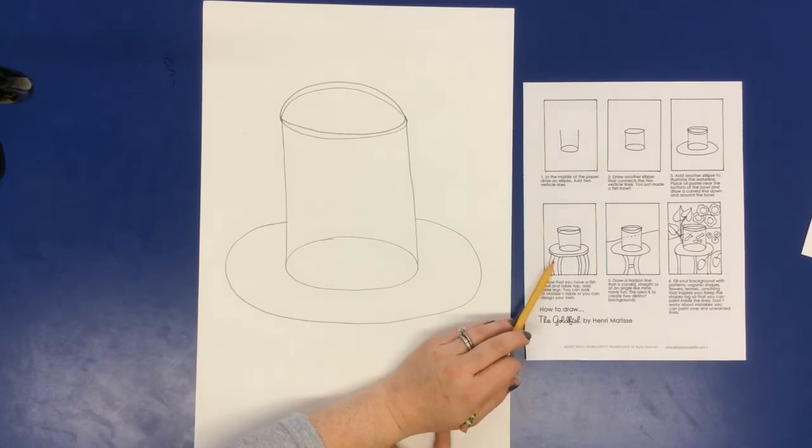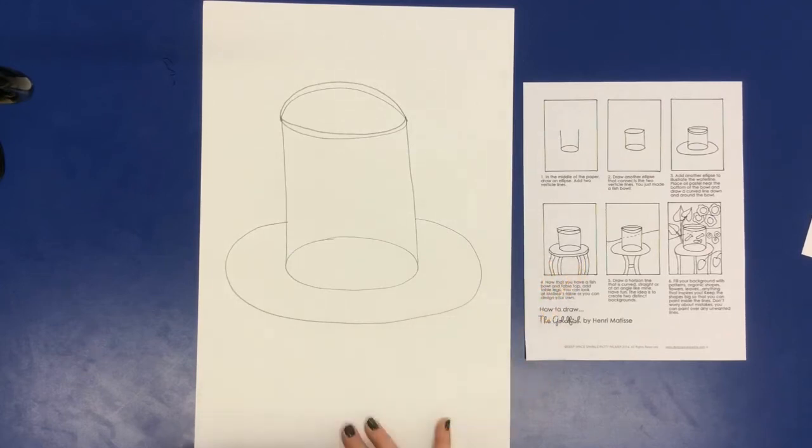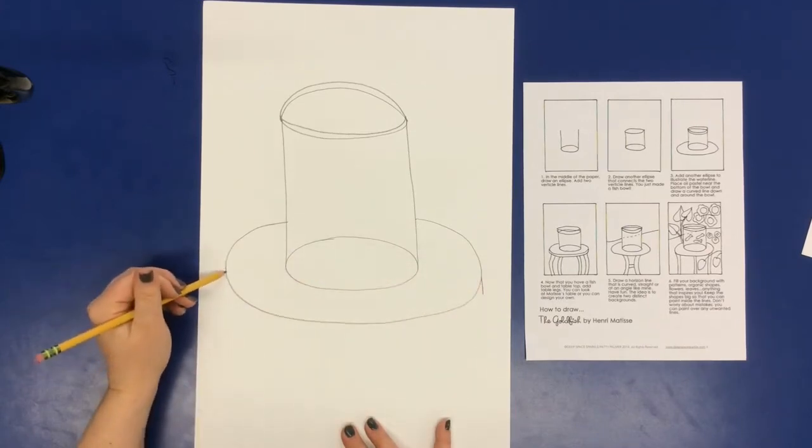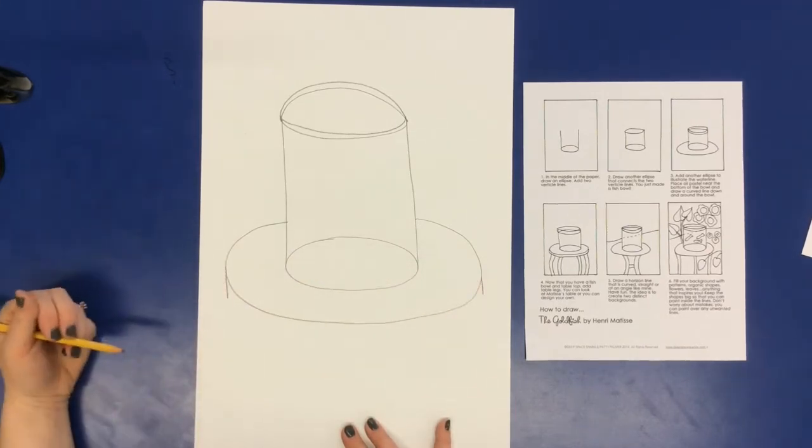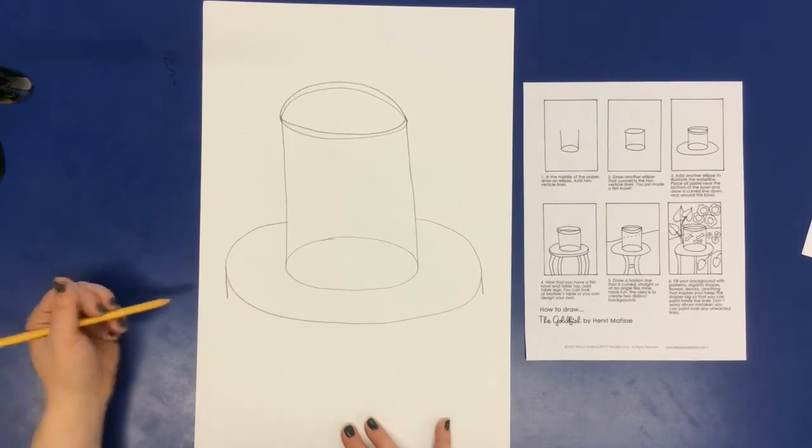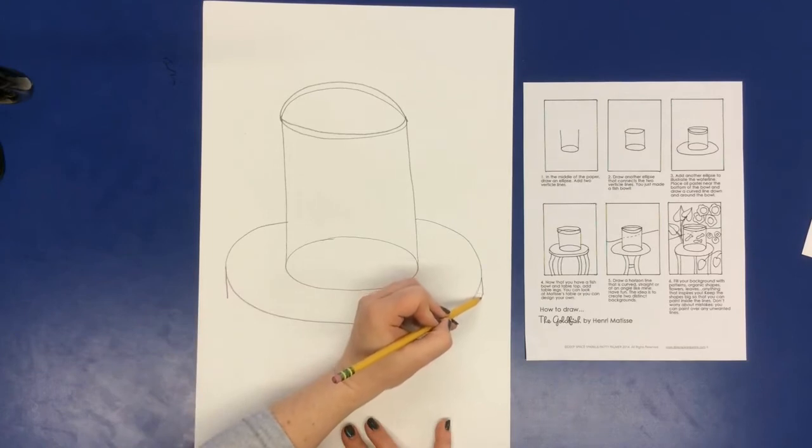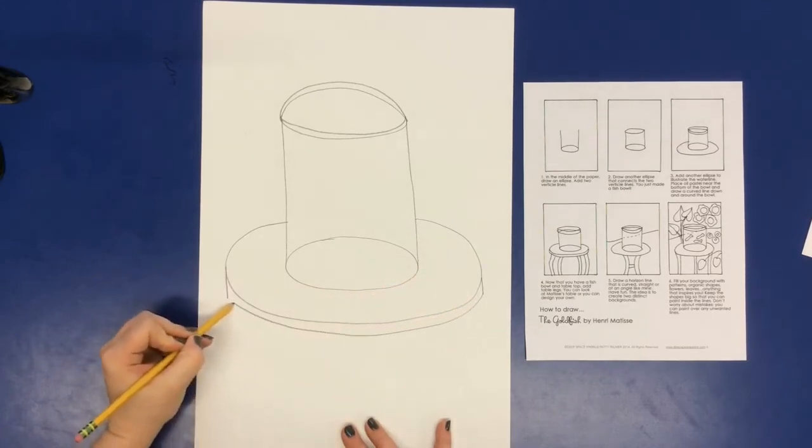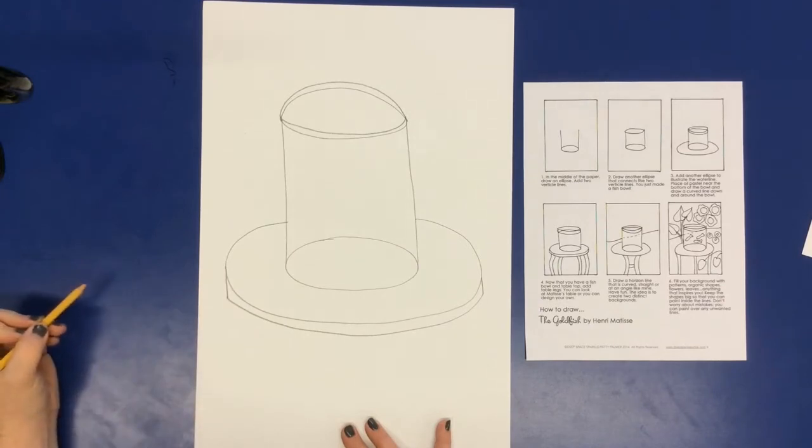The next thing we want to do is we're going to give it that 3D look to it, and how we're going to do that is we're going to draw the table itself. So we're going to do a line coming off of each side of our table, and then we're going to connect it with an upside down rainbow.